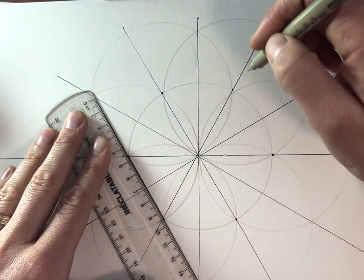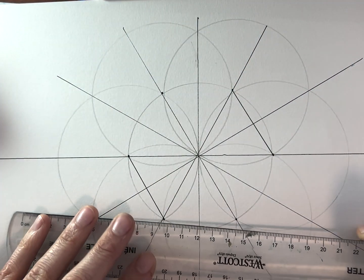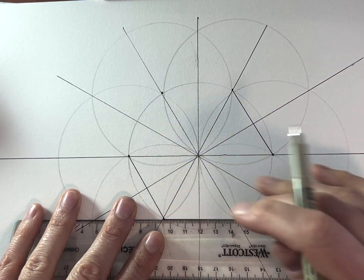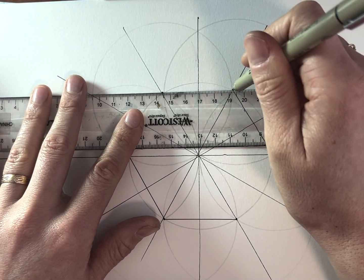And we're going to make a hexagon. Two. Three. Four.